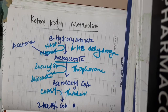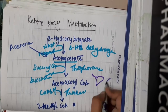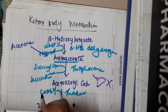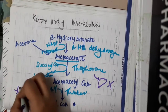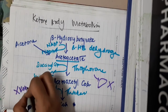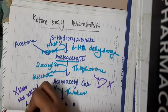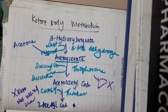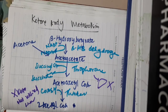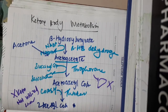In the liver, thiophorase — or succinyl-CoA — is absent. So ketone bodies are not utilized in the liver; the liver does not utilize ketone bodies. Ketone bodies are mainly utilized by muscle, because thiophorase is present in the muscle.